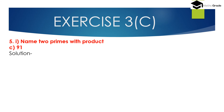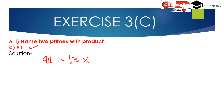Now the third part: name 2 prime numbers whose product is 91. We can write 91 as 13 multiplied by 7. Here both 13 and 7 are prime numbers. So 91 is the product of 2 prime numbers: 13 and 7.